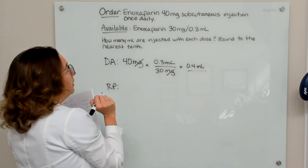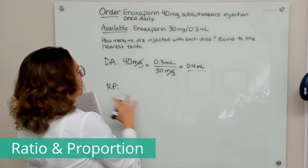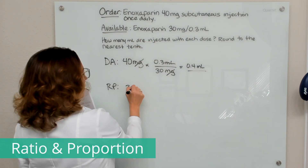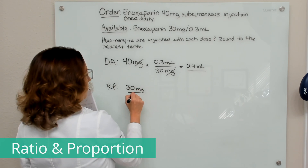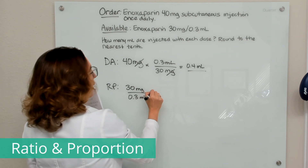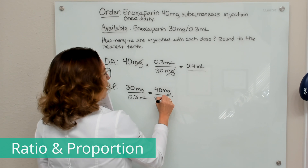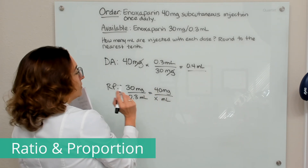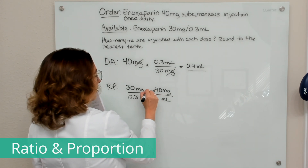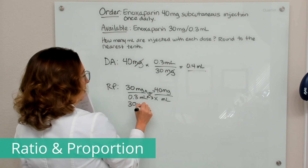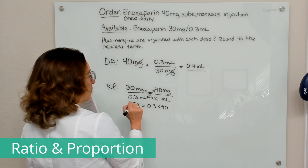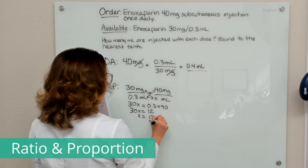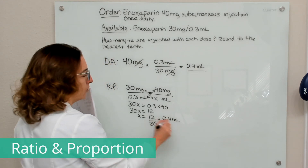Let's solve this same problem using ratio and proportion. Before you set up your ratios, check your units of measure to make sure they're consistent — and they are in this case. On one side of the equation we have our known ratio, which is our available concentration. On the other side we have the ordered dose and the unknown quantity — we don't know how many milliliters it will take to give the patient 40 milligrams. Cross multiplying: 30 times X equals 0.3 times 40, so 30X equals 12, and X equals 12 divided by 30, which equals 0.4 ml — already rounded to the nearest tenth.